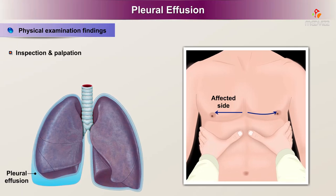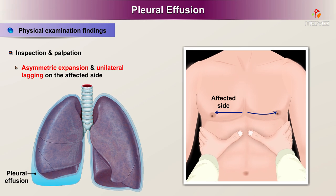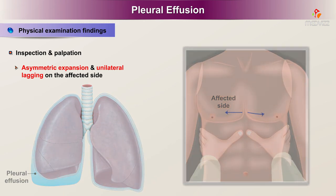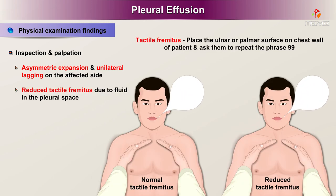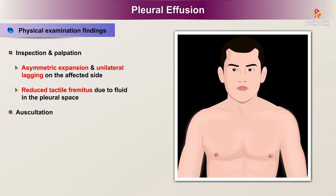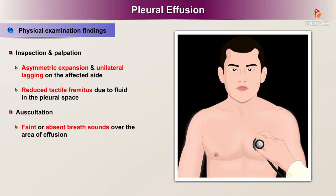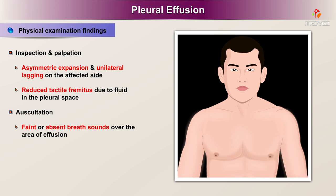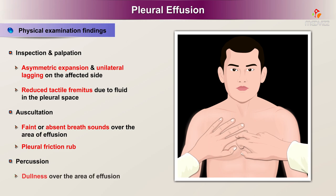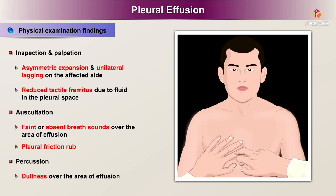Physical examination findings: on inspection and palpation, there is asymmetric expansion and unilateral lagging on the affected side. There is reduced tactile fremitus due to the fluid in the pleural space. On auscultation, there are faint or absent breath sounds over the area of effusion, and a pleural friction rub may be present. On percussion, there is dullness over the area of effusion.